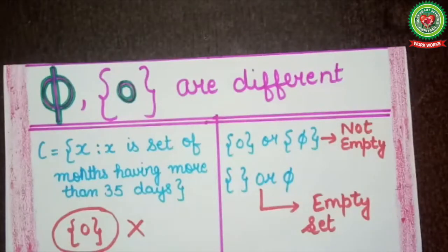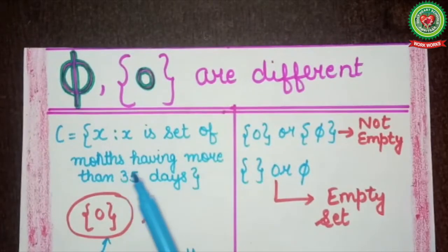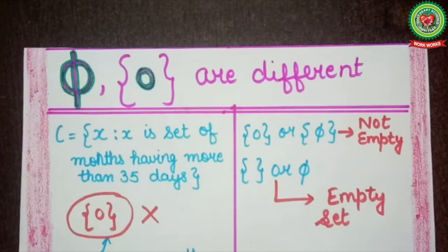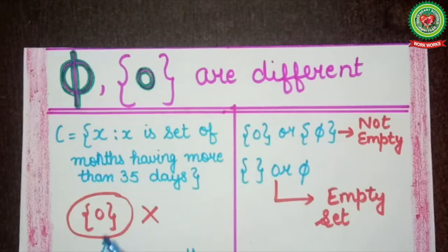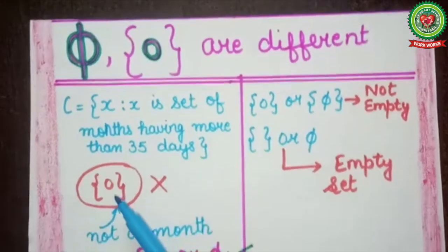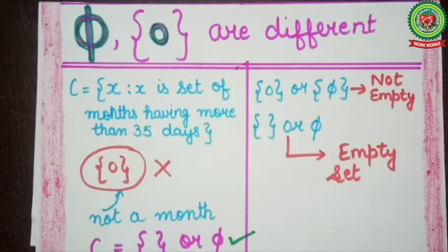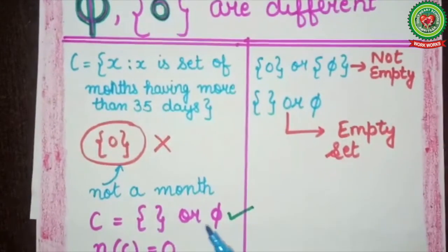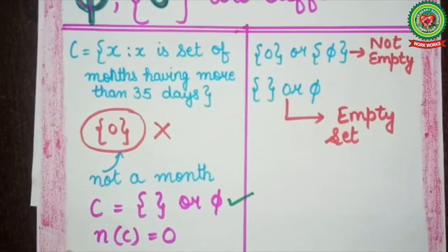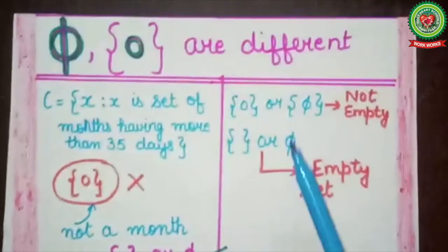Now, set C = {x | x is a set of months having more than 35 days}. February has 28 or 29 days, and other months have 30 or 31 days. So there is no month having more than 35 days. We might be tempted to write zero, but focus carefully — zero is not a month, it is a number, so that would be really wrong.